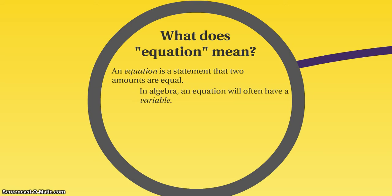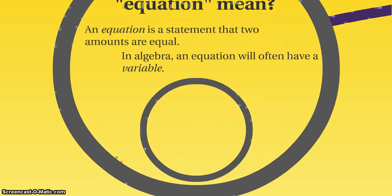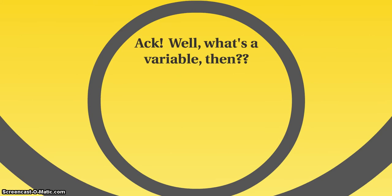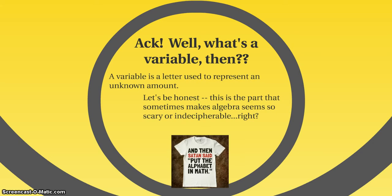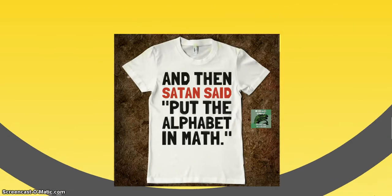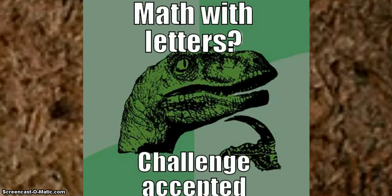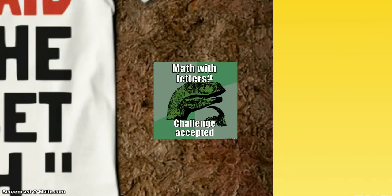But sometimes in algebra, an equation will often have a variable. So you might be thinking, well, what's a variable then? And I say, don't worry. A variable is a letter that's used to represent an unknown amount. Let's be honest, this is the part that sometimes makes algebra seem very scary and indecipherable, right? Like, oh my gosh, there's a letter in my equation. What do I do with it? I often joke that I need a t-shirt that says, and then Satan put the alphabet in math. And what do you know? People have made that t-shirt. But what I want you to do is change the way that you think. Don't think that it's a bad thing. Think of it more as math with letters, challenge accepted. Because this is all math that you can do, I promise.